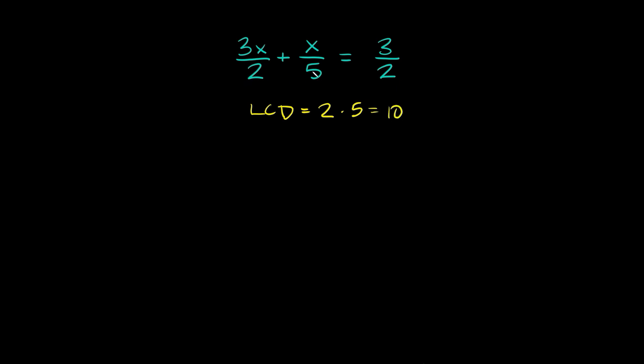So we need to change all these denominators into tens. So this 2 I'm going to multiply by 5, this 5 let's multiply by 2, and this 2 let's multiply by a 5.